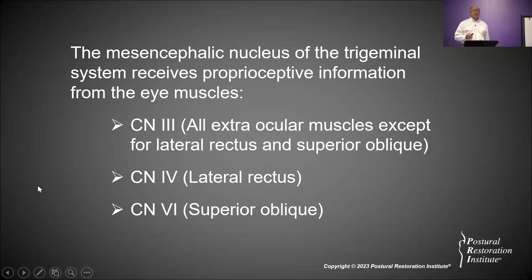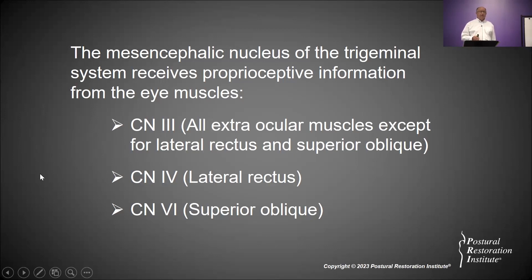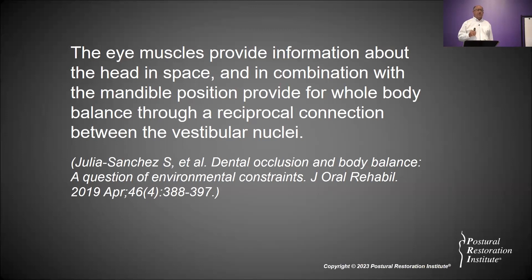The mesencephalic nucleus of the trigeminal system receives proprioceptive information from the eye muscles: cranial nerve three covers all extraocular muscles except lateral recti and superior oblique; cranial nerve four covers lateral rectus; and cranial nerve six covers the superior oblique. These are postural muscles. The eye muscles provide information about the head in space and, in combination with the mandible position, provide for whole body balance through a reciprocal connection between the vestibular nuclei.